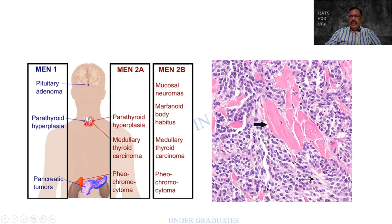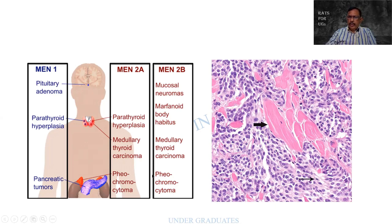This is a slide of medullary carcinoma of the thyroid. The cells are small and uniform, arranged in what is called an organoid pattern — resembling an endocrine gland. Also noted is a deposition of homogeneous pale eosinophilic acellular material, namely amyloid. Amyloid and medullary carcinoma go hand in hand.